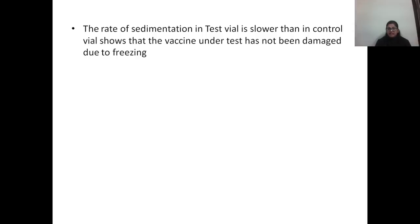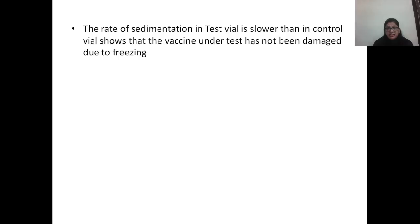If the rate of sedimentation in the test vial is slower than in the control vial, it shows the vaccine has not been damaged due to freezing. The freeze-sensitive vaccines can be remembered by the mnemonic 'T-series vaccines' — vaccines which have the letter T in their name. The most freeze-sensitive is hepatitis B vaccine, followed by pentavalent vaccine, tetanus toxoid, and DPT vaccine.